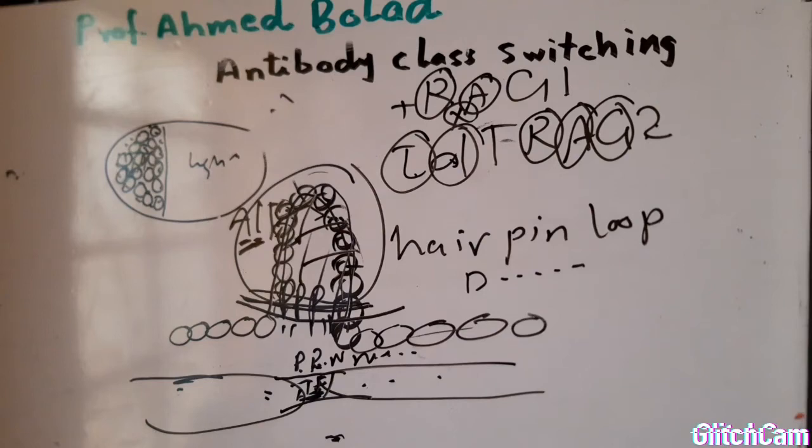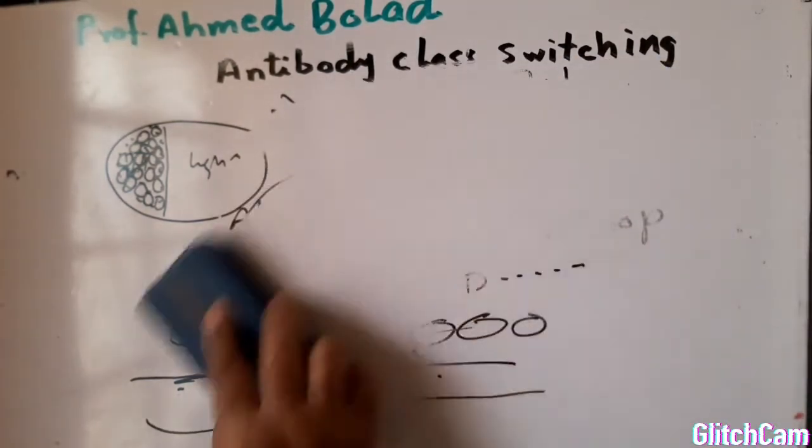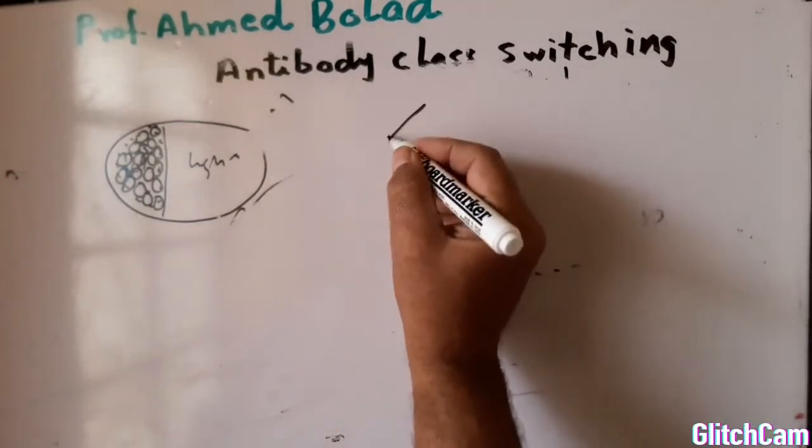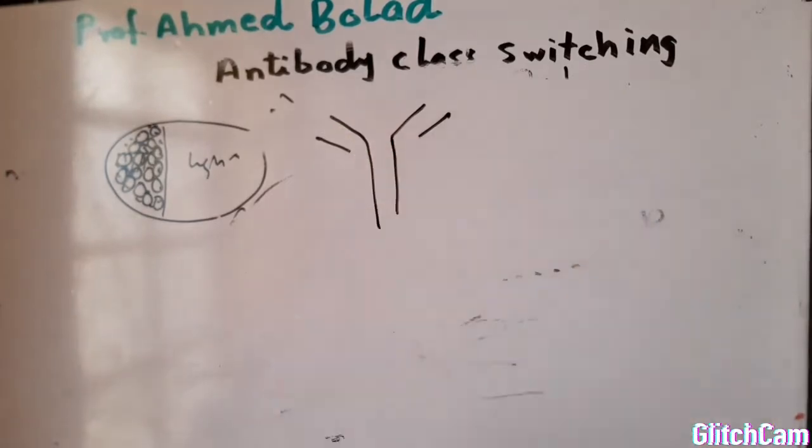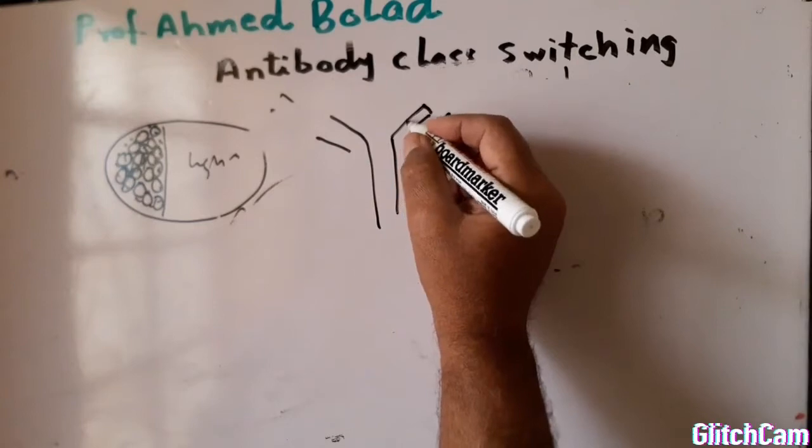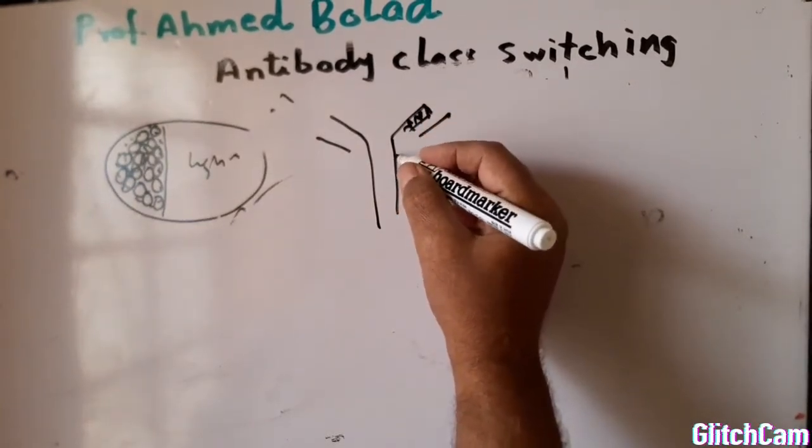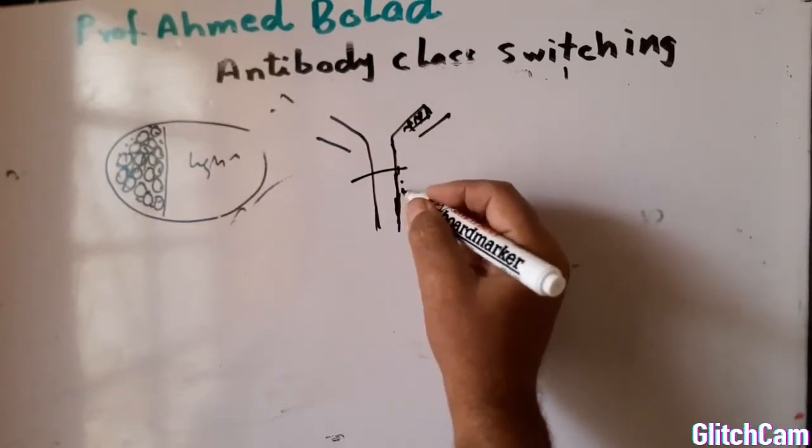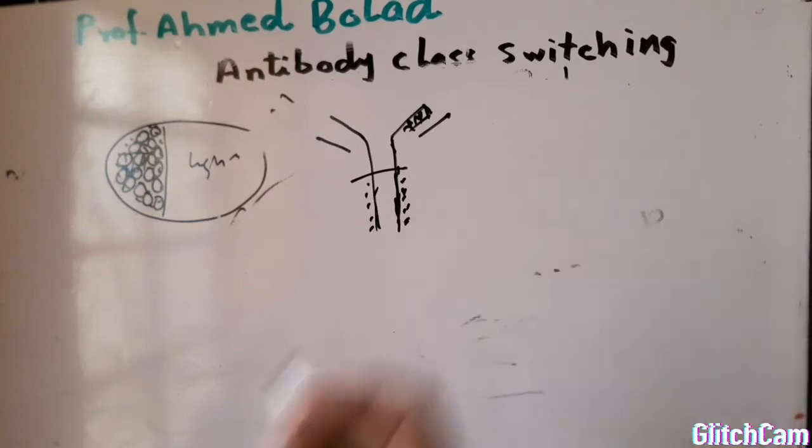This will help us understand class switch. As you know, the antibody has two identical heavy chains and two identical light chains. In the heavy chain, we have the variable region and the constant region, and we have isotype determinants. Isotype means the antibody class.